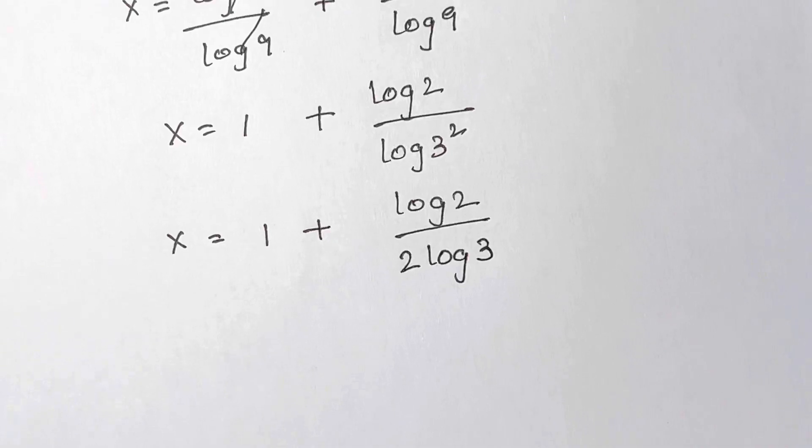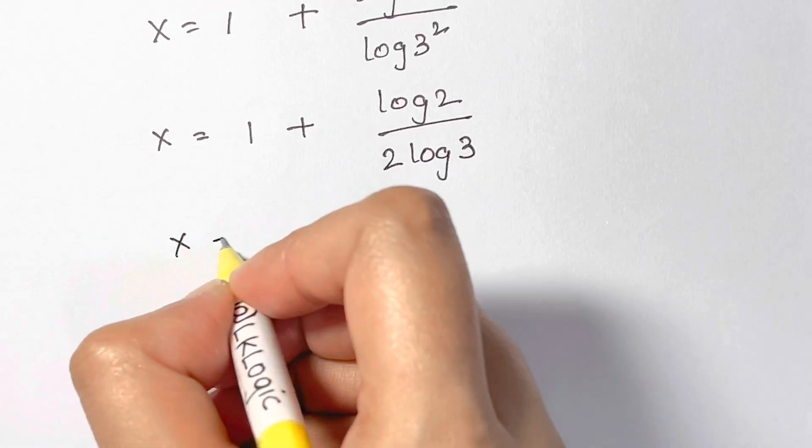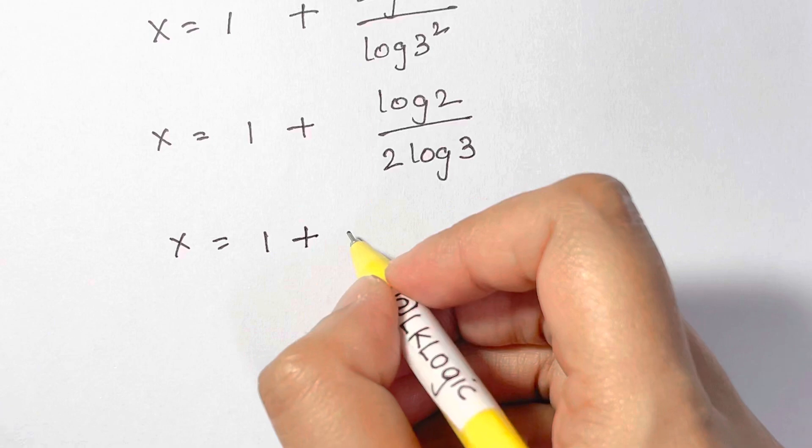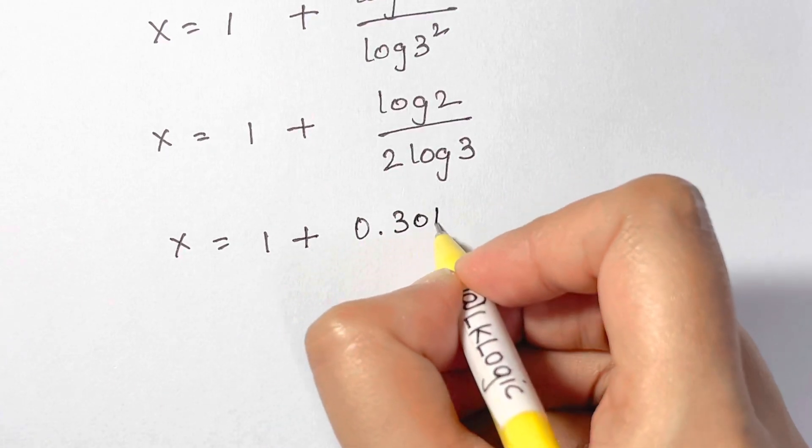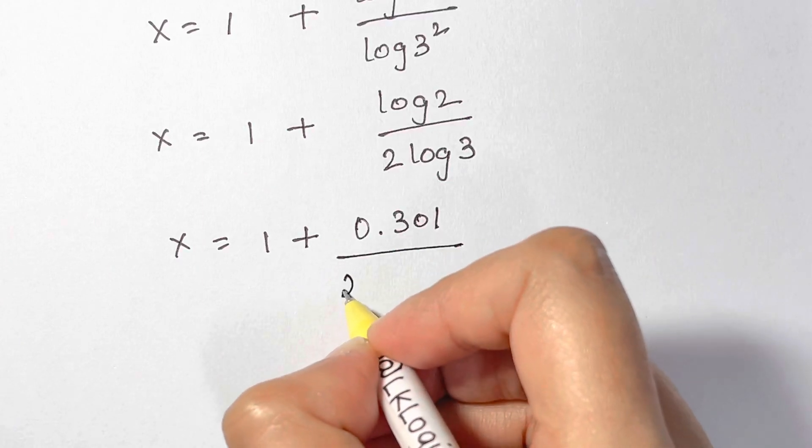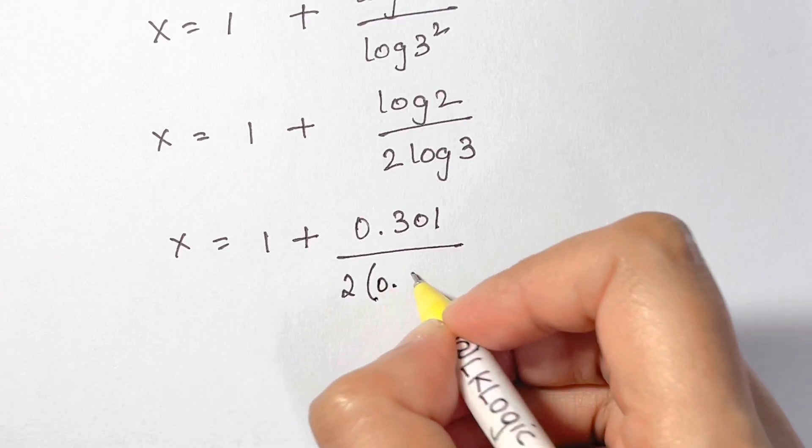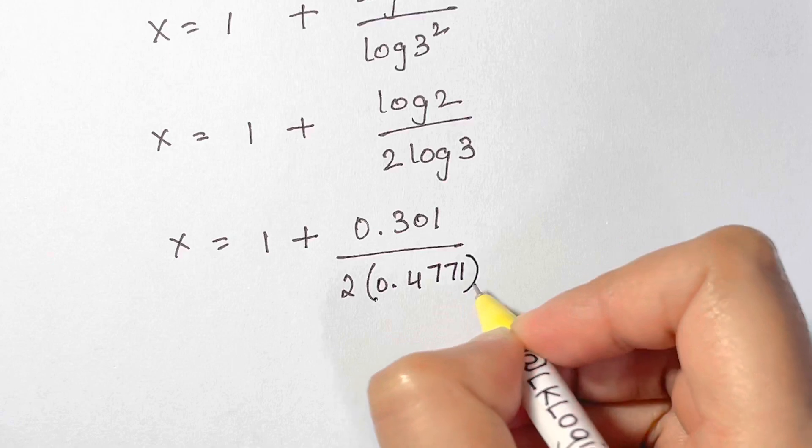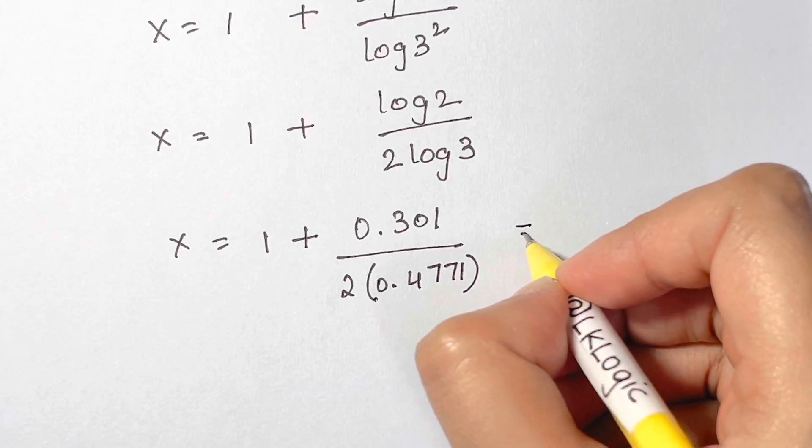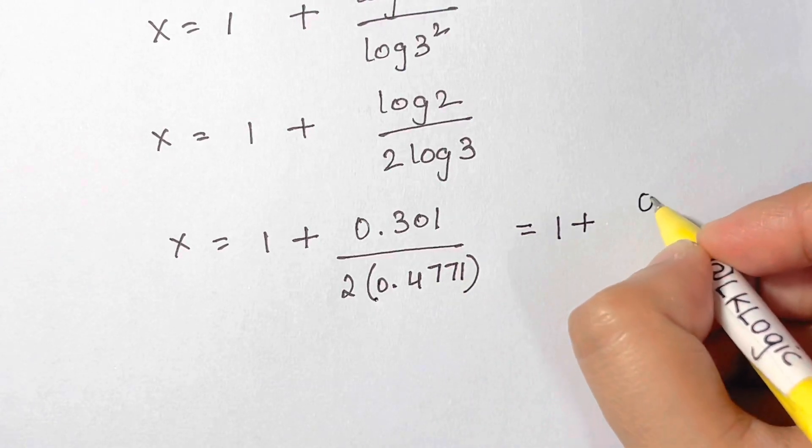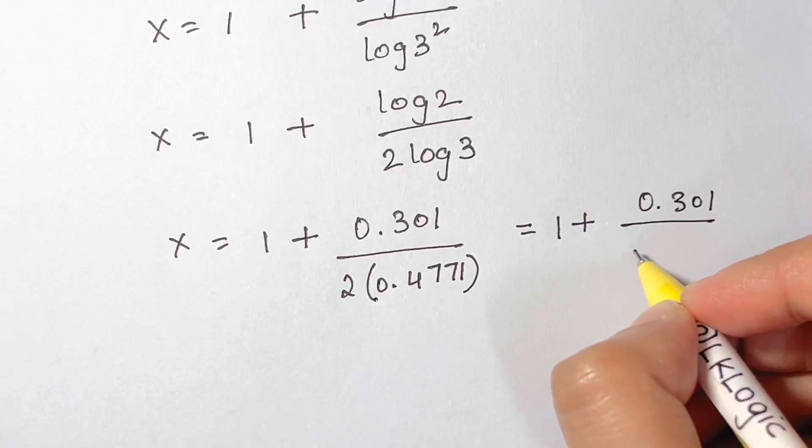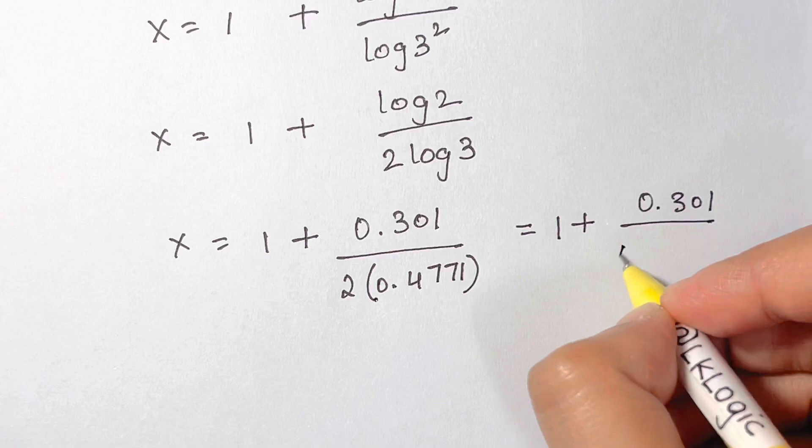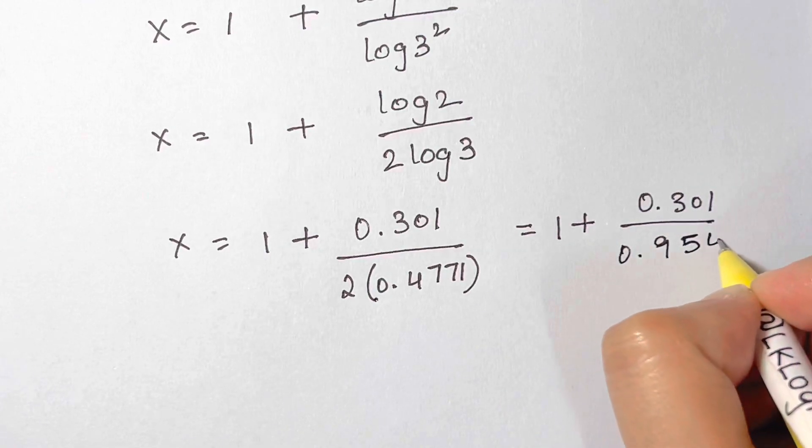X is equal to 1 plus log 2, which is 0.301, divided by 2 times log 3, which is 0.4771. That will be equal to 1 plus 0.301 divided by 2 multiplied by 0.4771, which is 0.9542.